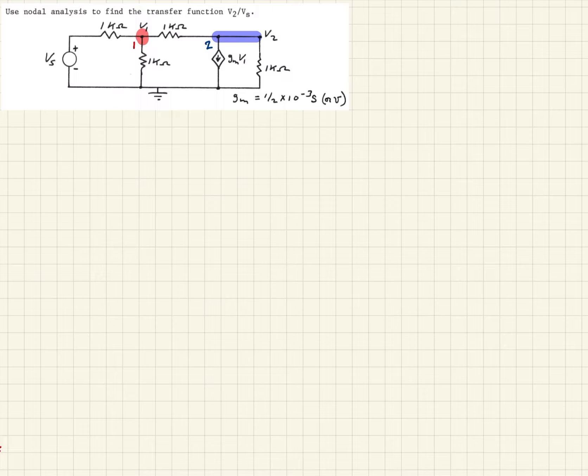Now what we're going to do is sum the currents going in and out of each of those nodes. Let's start with node 1. The first leg of this, V1 minus Vs, that's the difference in the voltages on each side of the resistor, divided by 1k ohm. We're defining current leaving the node as positive.